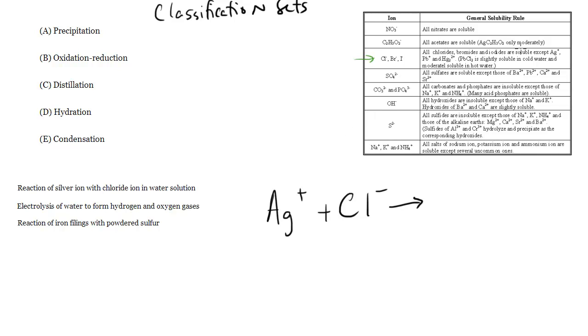Chloride is soluble except with Ag+, so that tells us that this AgCl by the solubility rules is insoluble, so it will drop out of solution as a precipitate, which means of course that reaction of silver ion with chloride ion is A, a precipitation reaction.